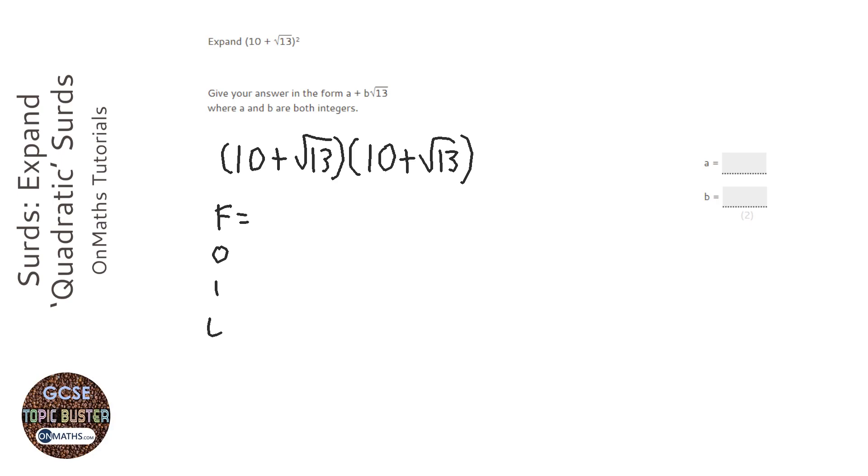Now, FOIL stands for first, so we're going to times the two first ones, which are the two 10s. So 10 times 10, which is 100. Then outside, now outside are the two outside ones, which are these two. So we're going to do 10 times root 13, which is just 10 root 13.